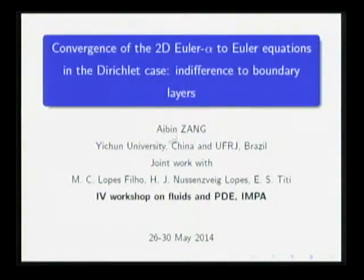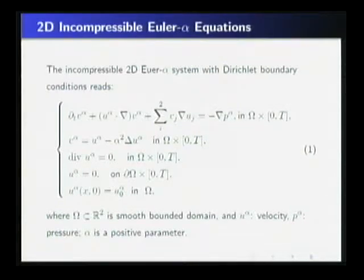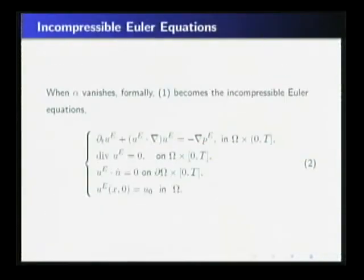Yesterday, Alina reviewed this model. This model we denote V alpha equals U alpha minus alpha squared Laplacian U alpha. And this is the boundary condition, U alpha Dirichlet boundary condition, where omega is a 2D smooth-bounded domain. U alpha is velocity, and alpha is positive parameter. When alpha vanishes, the equation becomes an incompressible Euler equation with the Dirichlet boundary.